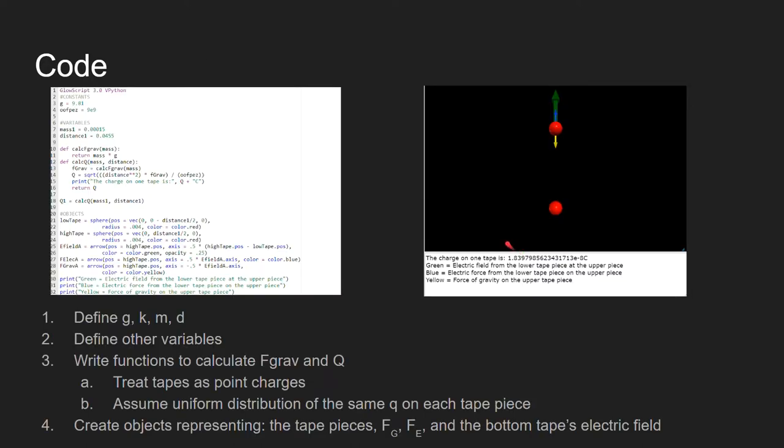Now code was also used to confirm the calculation of charge. This is a general overview of the code's format. Code notably assumed or took the tapes as point charges, as was done in the calculations by hand, and also assumed a uniform distribution of charge on the two pieces of tape that was equal to one another.